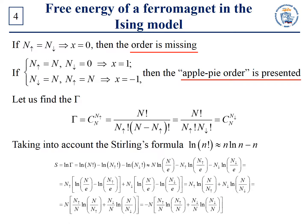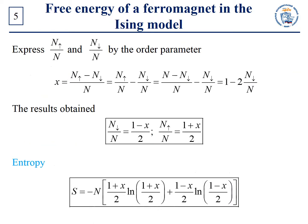This fact imposes a limitation on gamma. In other words, the number of possible states of the system at a given temperature implies the number of possible states at a given difference of N_up and N_down. Let us find gamma. Taking into account Stirling's formula, we obtain the entropy. Express N_up and N_down through the order parameter x. Finally, for the entropy we obtain the following form.